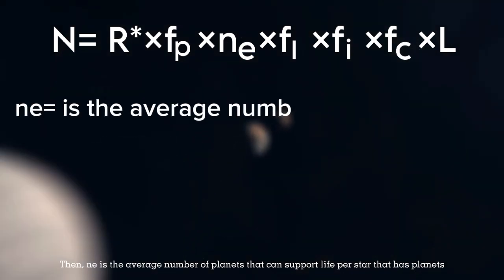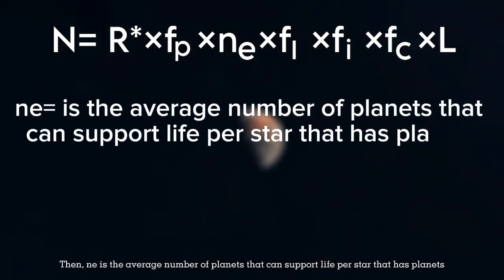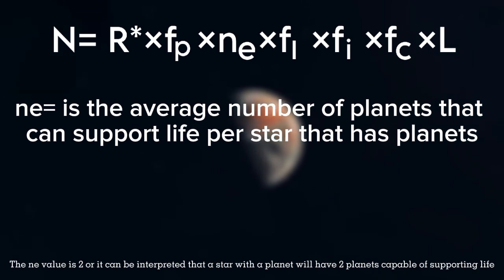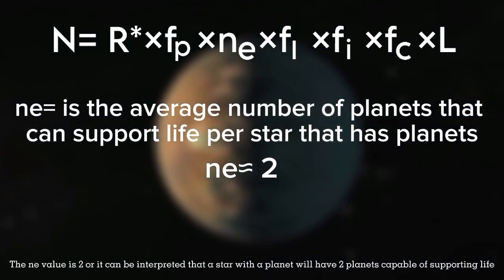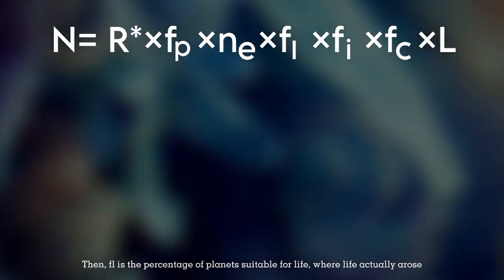Then, ne is the average number of planets that can support life per star that has planets. The ne value is 2, or it can be interpreted that a star with a planet will have two planets capable of supporting life.